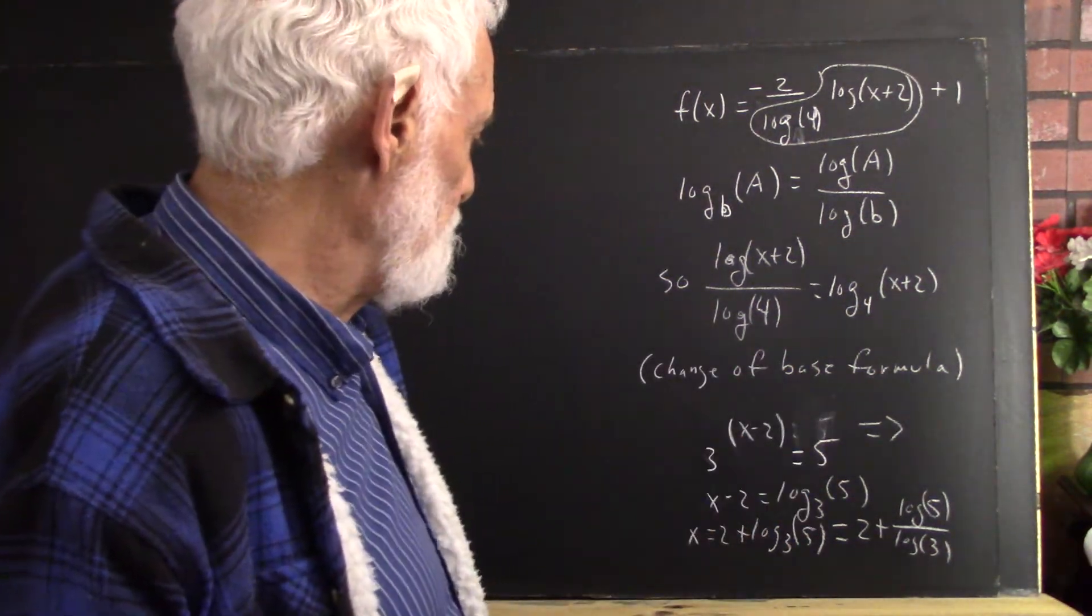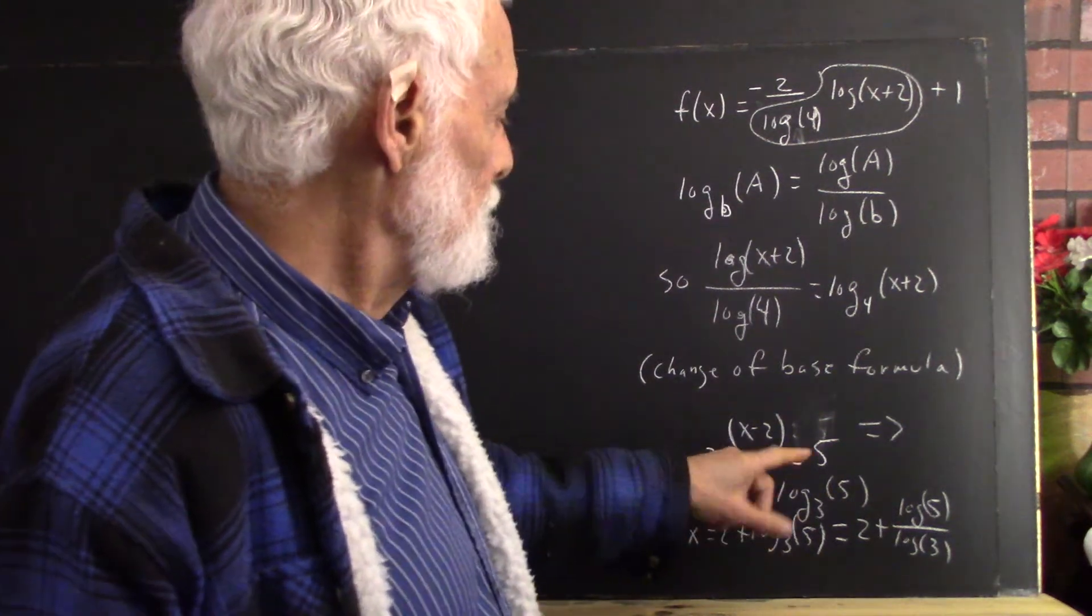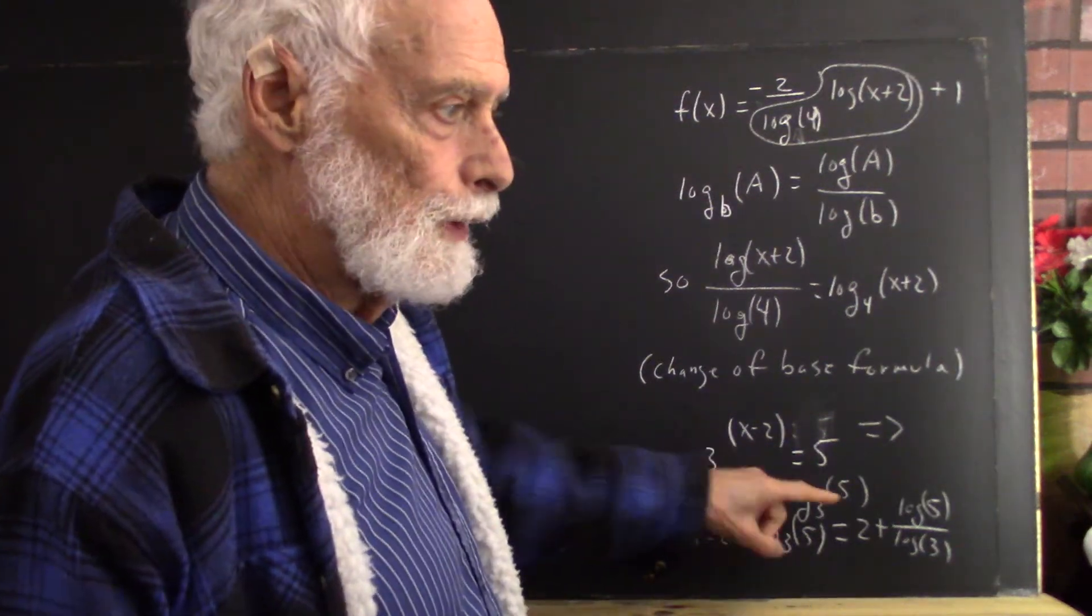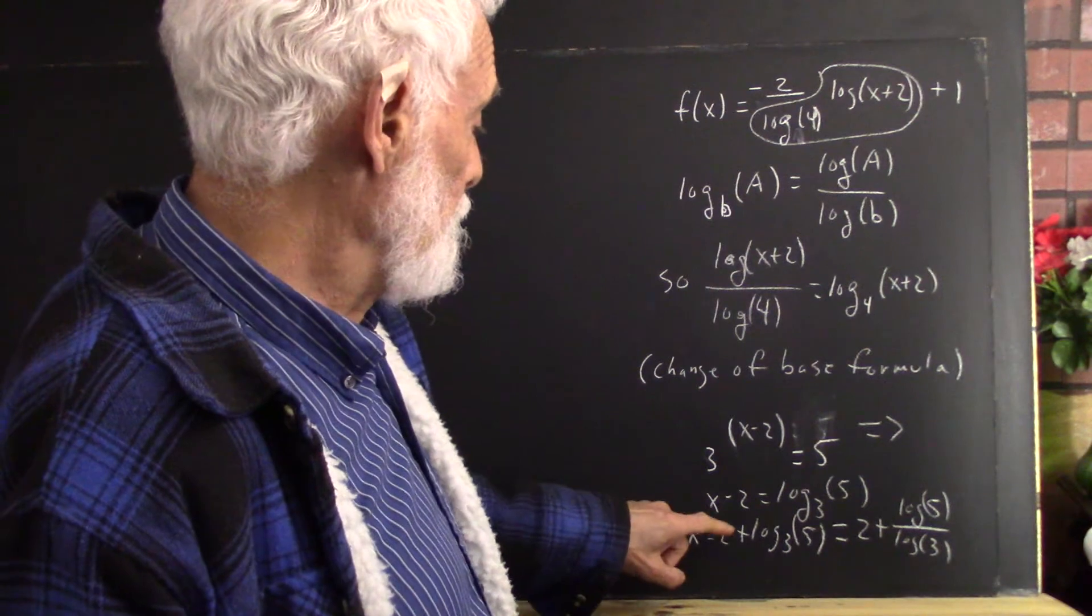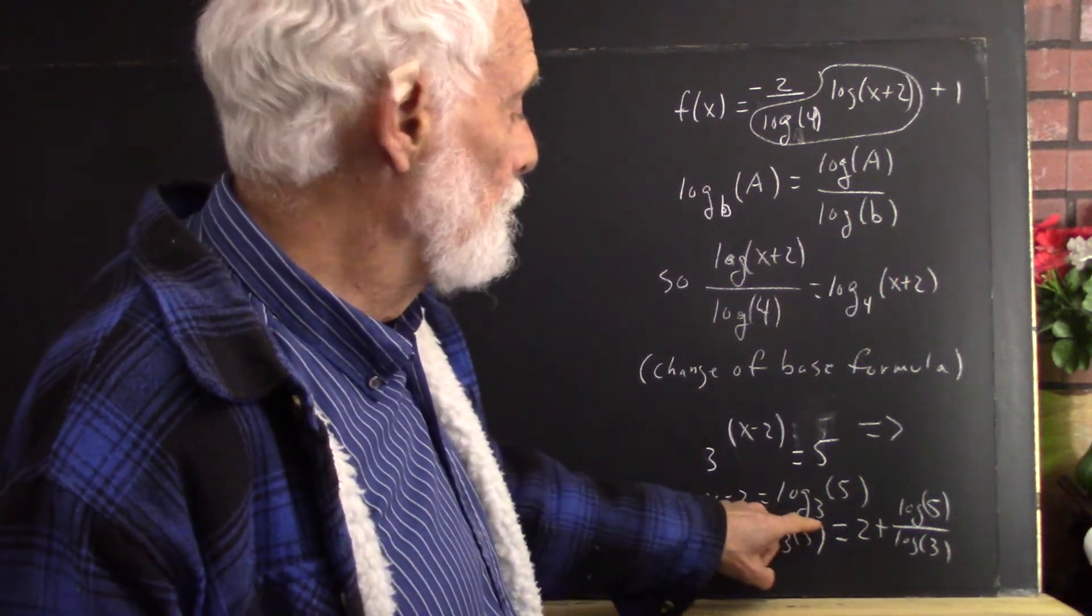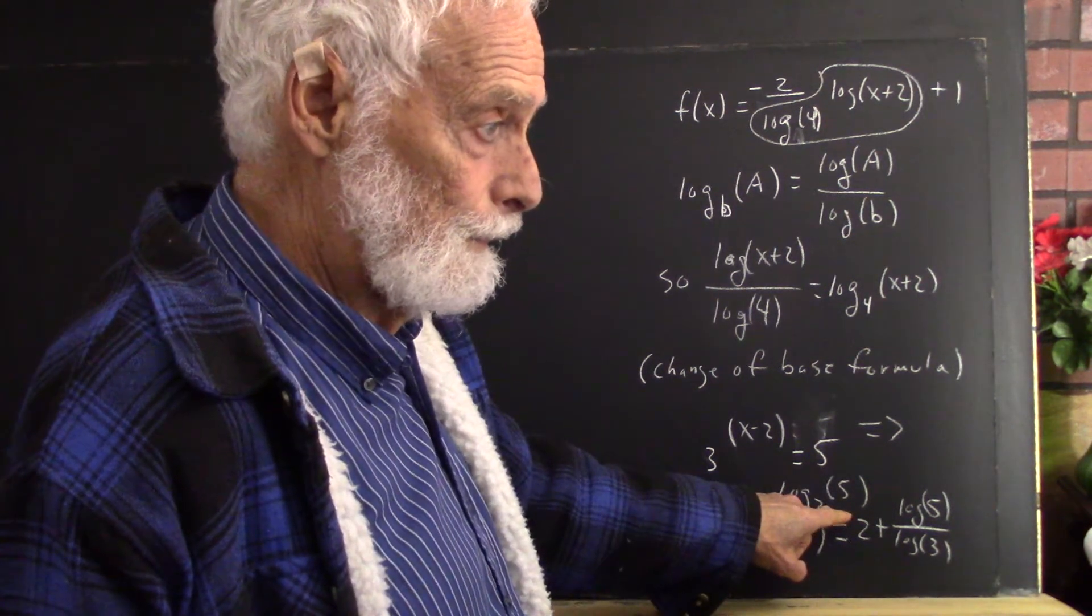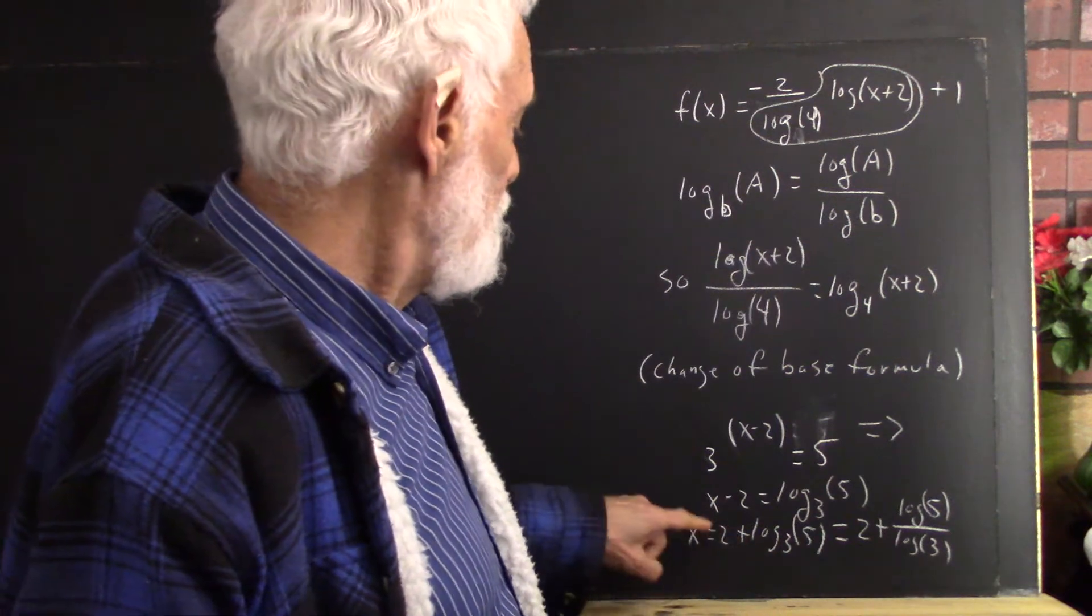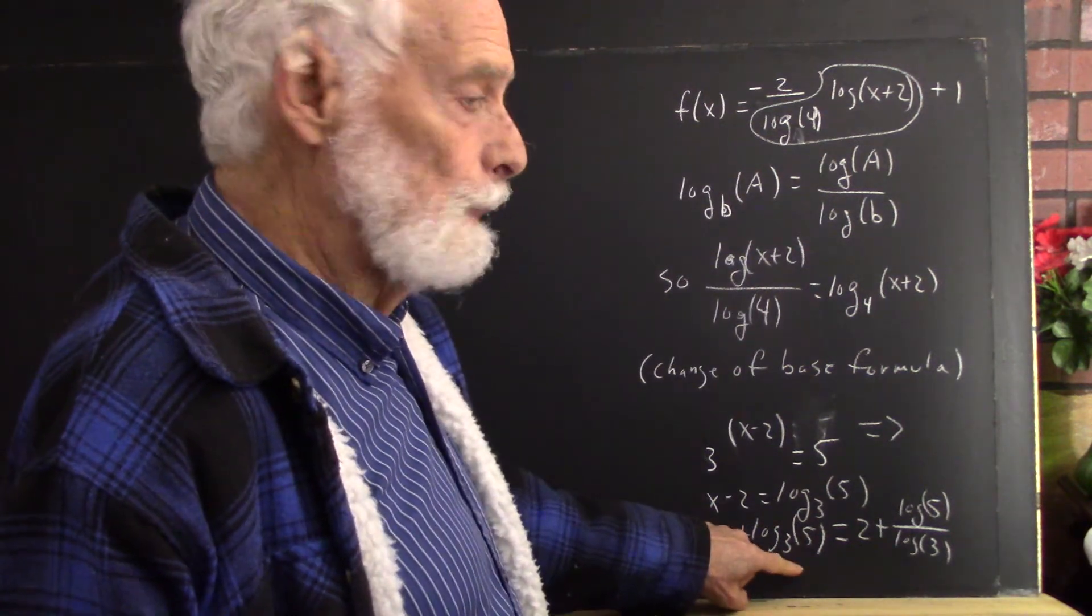The solution of this equation is, we change this to logarithmic form and we get x minus 2 is log base 3 of 5. And then x is going to be 2 plus log base 3 of 5.